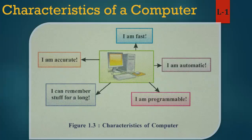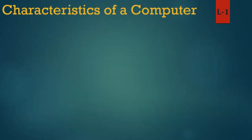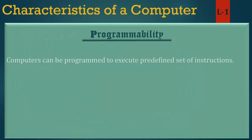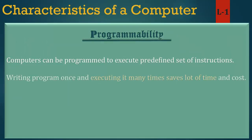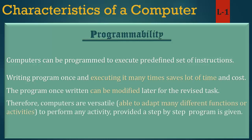Now we learn programmability in detail. Programmability: computers can be programmed to execute a predefined set of instructions. Writing a program once and executing it many times saves a lot of time and cost. The program once written can be modified later for a revised task. Therefore, computers are versatile — able to adapt to many different functions or activities — to perform any activity, provided a step-by-step program is given.